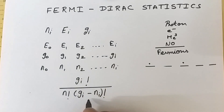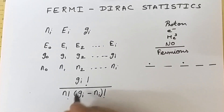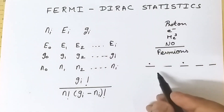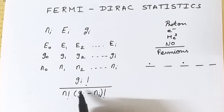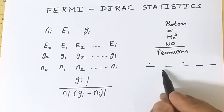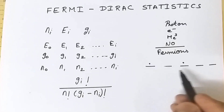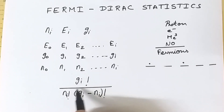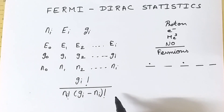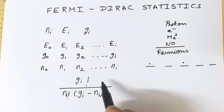The term Gi minus Ni represents the amount of empty space, and that empty space must also be permuted. For example, if we have five states and need to place two particles, we compute 5! divided by 2! times (5−2)! = 3!. In this way we can arrange Ni particles into Gi different states using this permutation combination.